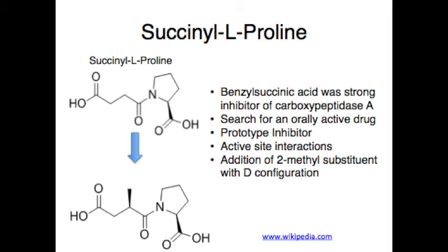Succinyl-L-proline presented four different interactions with the active site of ACE: one, the carboxylate ions interact with the positive charges in the active site; two, the proline ring fit into the enzyme subsite; three, the methyl group fit into the enzyme subsite; and four, the carbonyl interacted with the hydrogen bond donors of the enzyme. The amino acids in the original sequence of the non-peptide teprotide were tested, but none were inhibitory against angiotensin-1 and bradykinin. Therefore, the succinyl amino acid derivative was proposed to be an ACE inhibitor, and succinyl-L-proline was found to be such an inhibitor. Moving forward, the addition of the 2-methyl substituent with D-configuration was found to enhance inhibitory potency by about 15 times that of succinyl-L-proline.